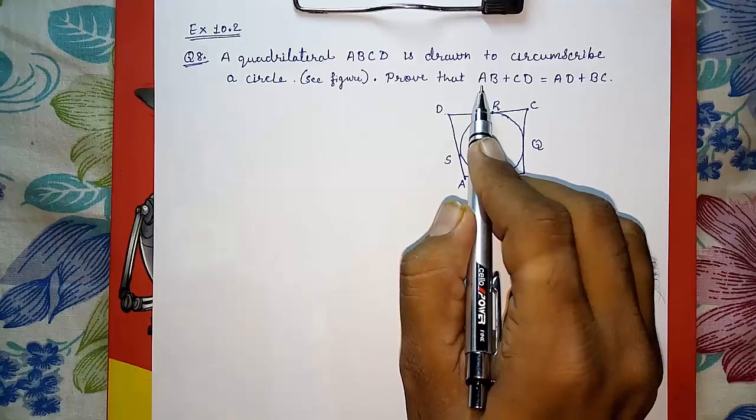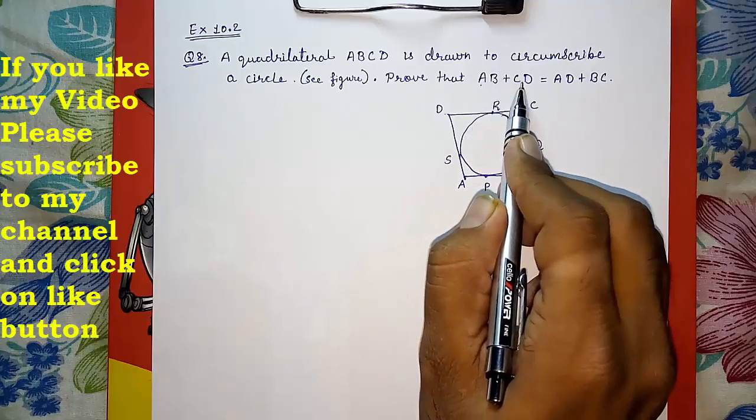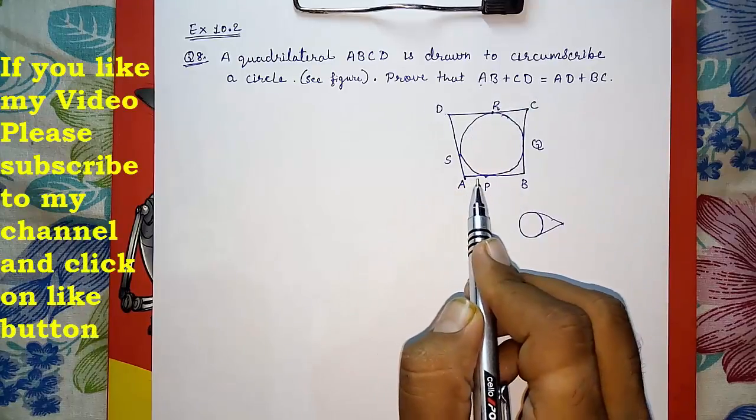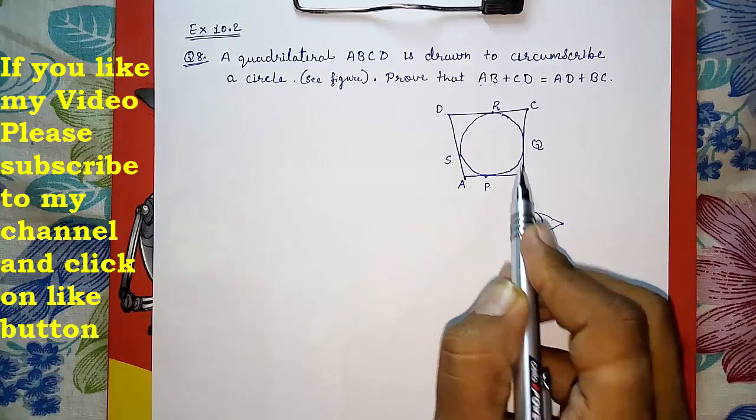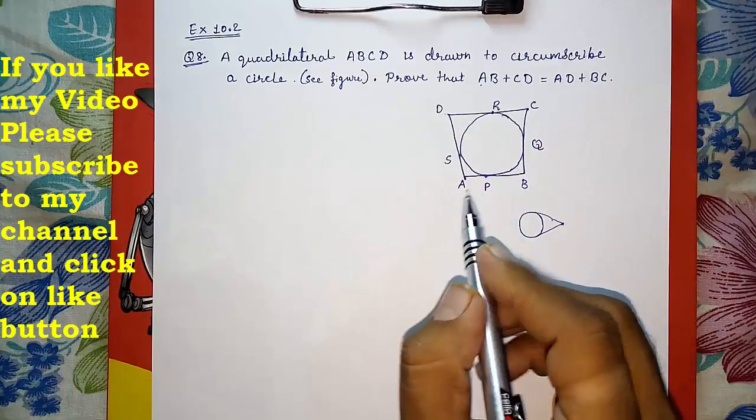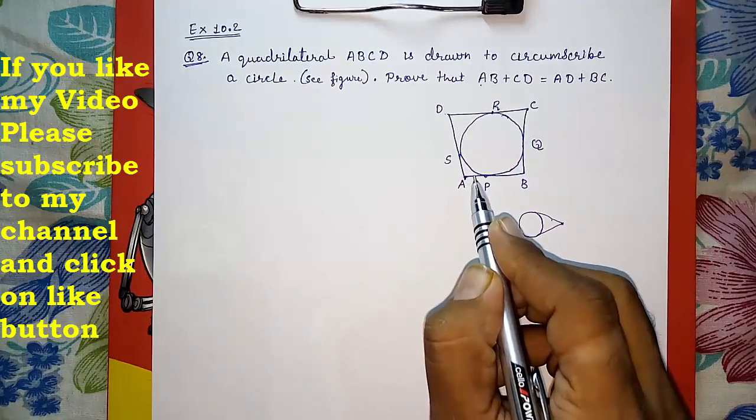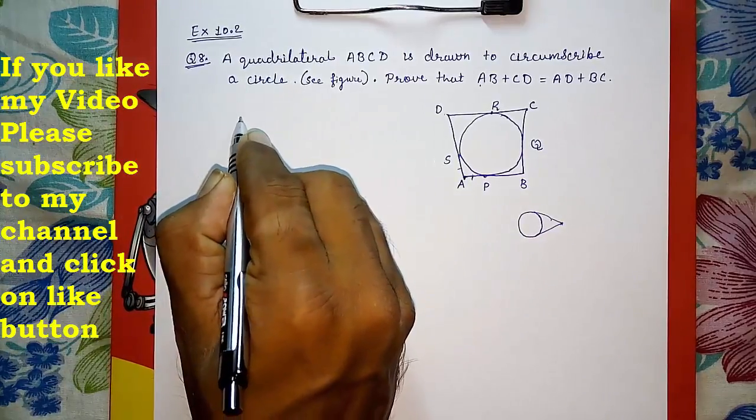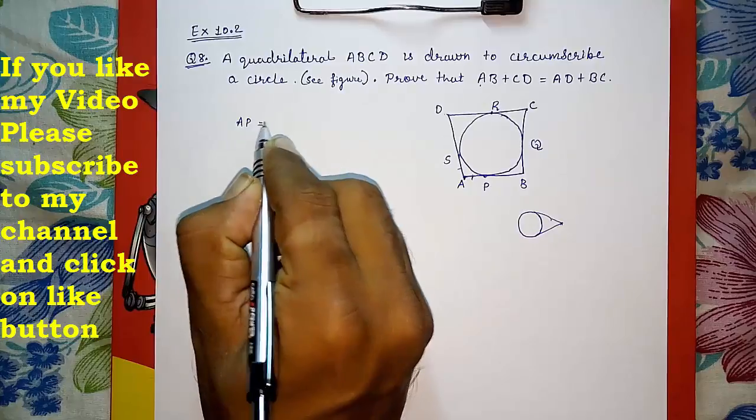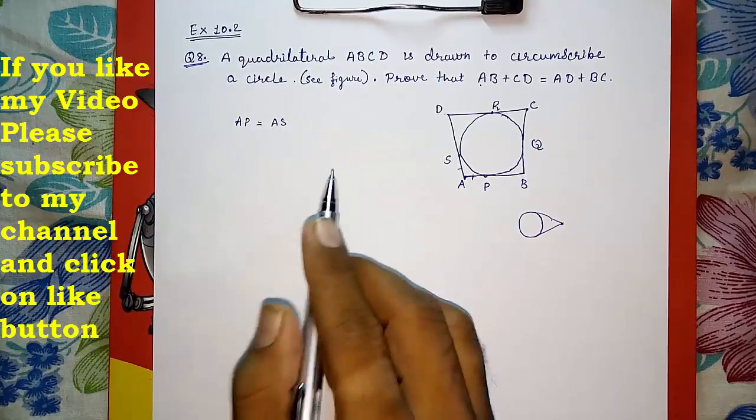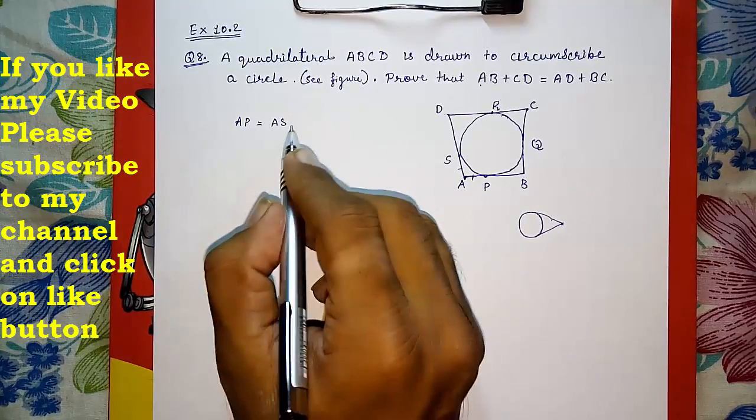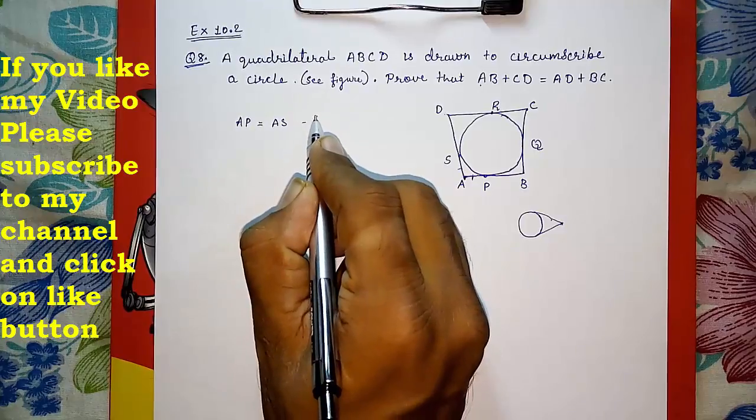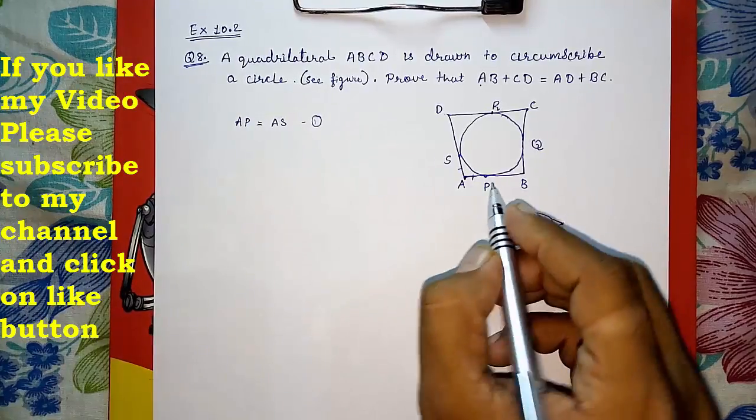I will start with AS. Why? Because I want AB plus CD. So first I will take this side and this side, then this side and this side. First I am going to take AP equals to AS. Solution: AP is equal to AS. Tangents from exterior point. Take it as result number one.